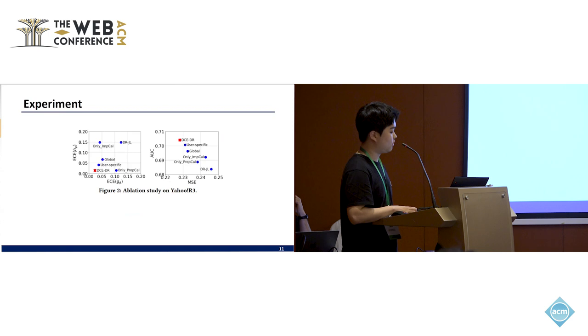And in our ablation study, we show that calibration for the imputed error and calibration for the propensity score both help the doubly robust estimator for better recommendation performance.